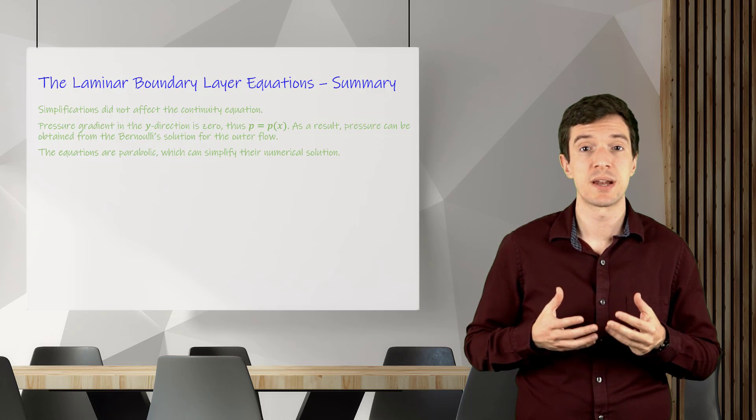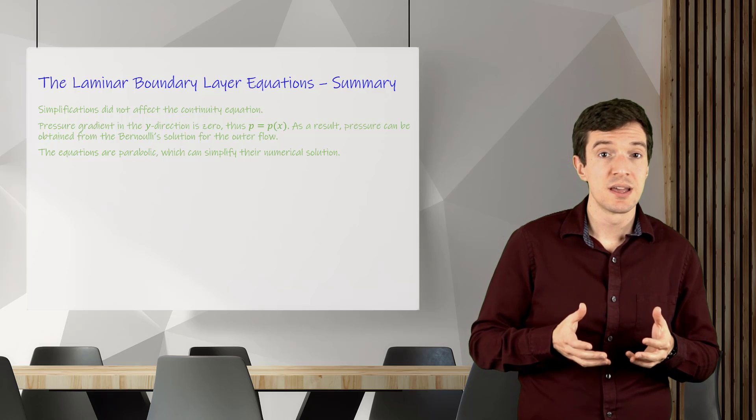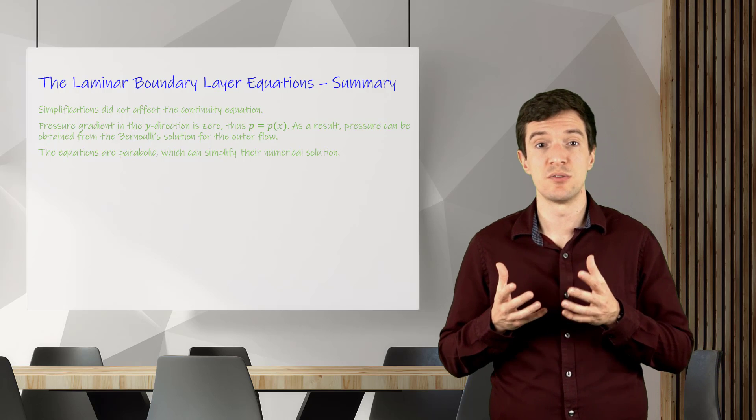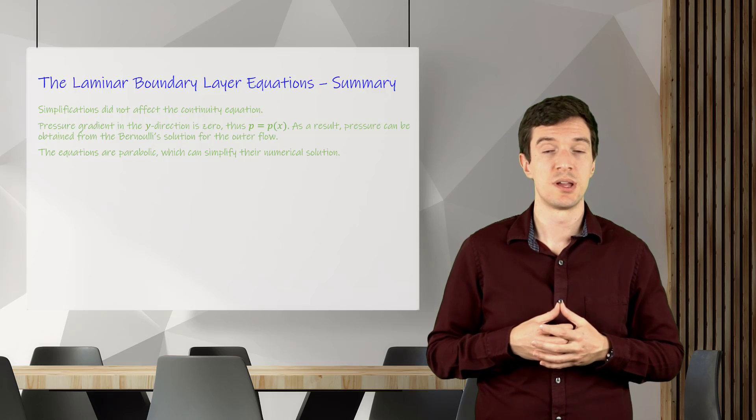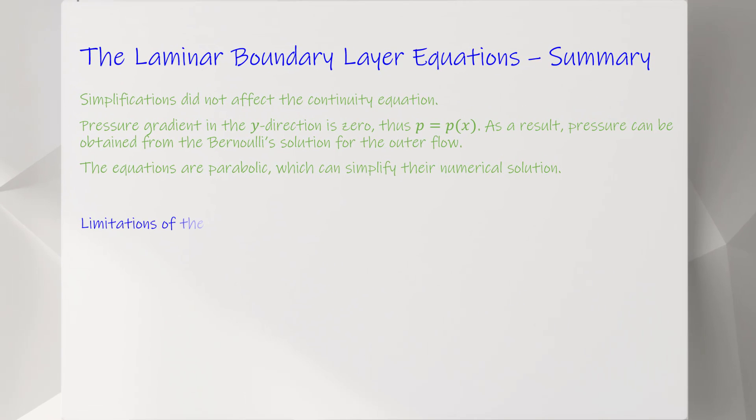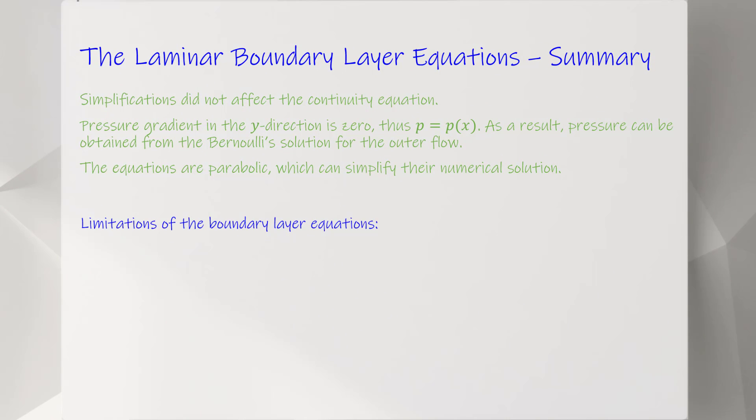The set of equations we derived has some limitations due to the assumptions we made in the process of deriving them. The equations are valid for large Reynolds numbers in the laminar regime. The solution can be obtained for any Reynolds number, but it is not valid when the boundary layer becomes turbulent.